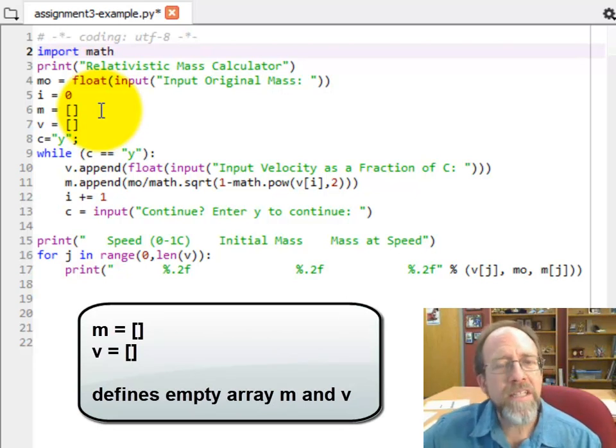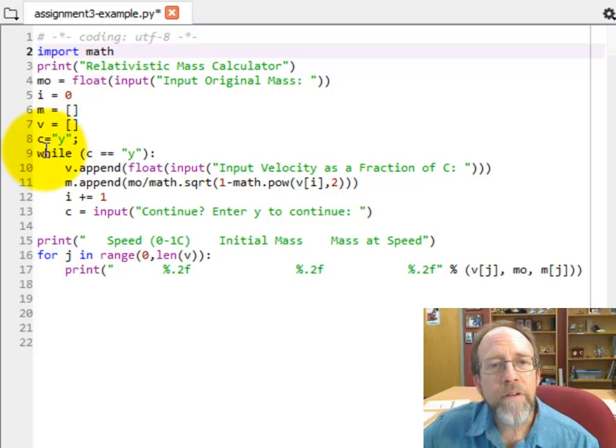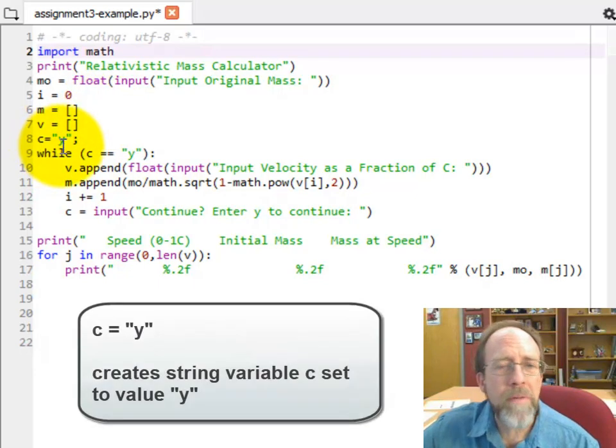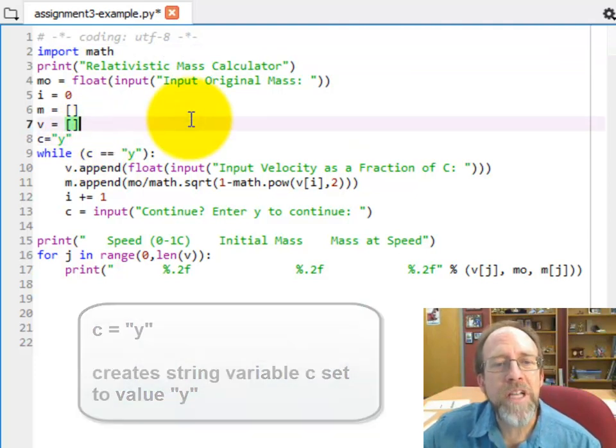Well, what that is is it creates an empty array m, and an empty array v. You saw arrays in the last one, but now I'm actually starting off with this empty array. And then I created a variable called c, which is really my continue variable, which I set equal to y. I do not need that semicolon right there so I can get rid of that. So c equals y.